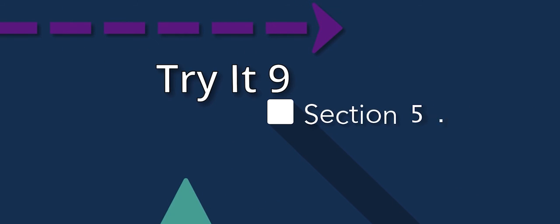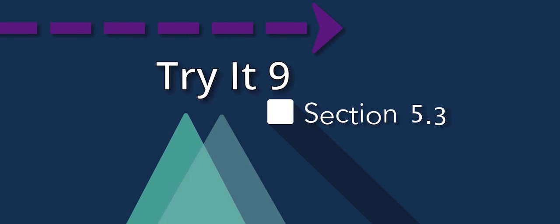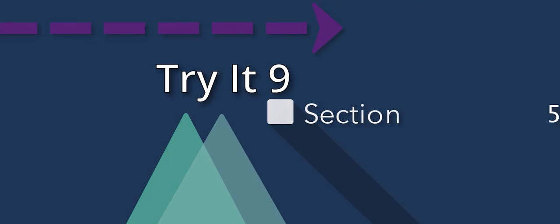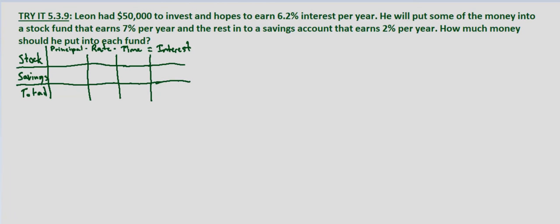In this problem we're looking at a simple interest problem. We're told that Leon had $50,000 to invest and hopes to earn 6.2% interest per year. He will put some of the money into a stock fund that earns 7% per year and the rest into a savings account that earns 2% per year. How much money should he put into each fund in order to get a total of 6.2% interest per year?